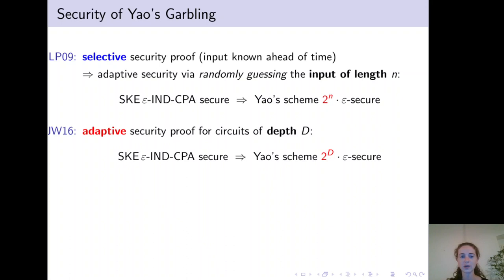Later, Jafargholi and Wichs proved adaptive security at a loss that is exponential only in the depth of the circuit. So for NC1 circuits, for example, they achieve security of Yao's scheme at polynomial loss in security only.